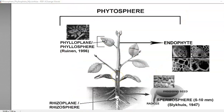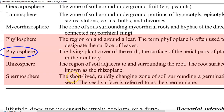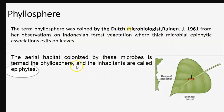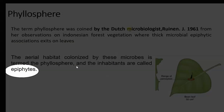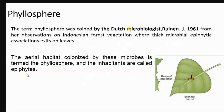The next sphere is the phyllosphere, which also has a related region called the phylloplane. Phyllosphere refers to the region on and around the leaf surface, while the term phylloplane specifically refers to the surface of the leaves. Microorganisms that commonly inhabit or are present in the phyllosphere are referred to as epiphytes.